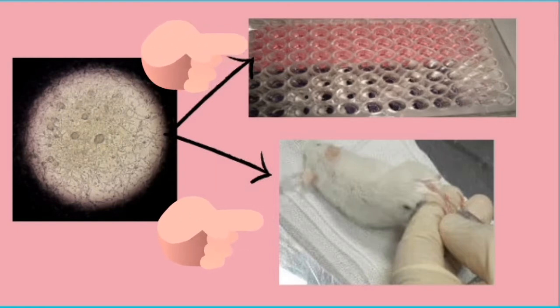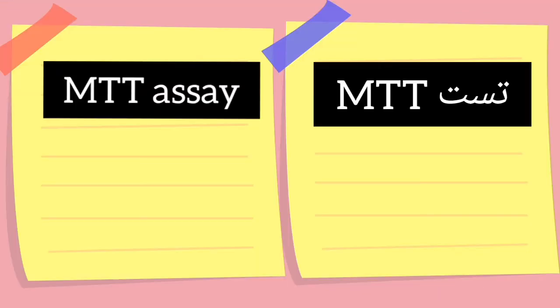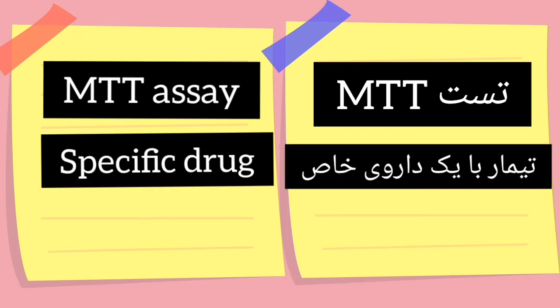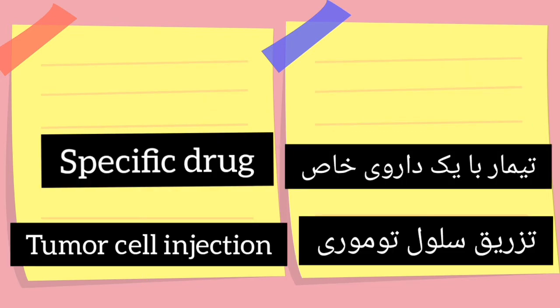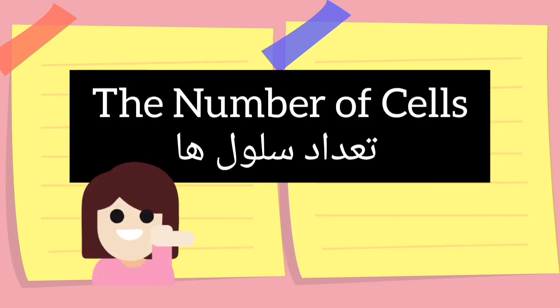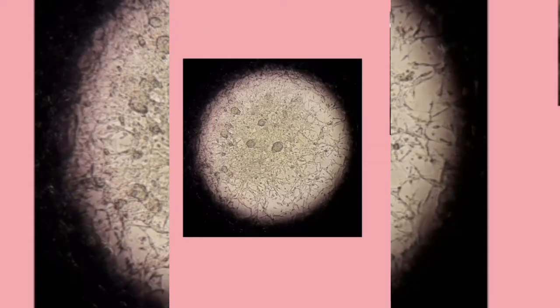Cell density, or number of cells per unit volume, is very important for whatever your experiment is. For example, for performing MTT assay, treating your cells with a specific drug, or injecting tumor cells to your animal model, you need to know the number of cells in your suspension.